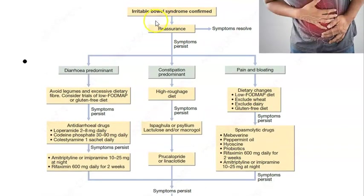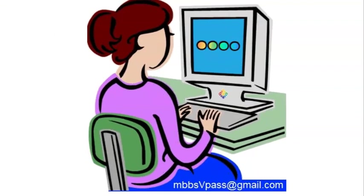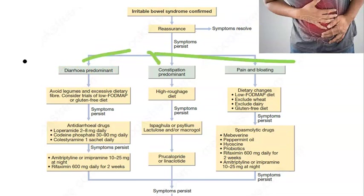For treatment: once you have confirmed IBS and ruled out other conditions, first reassure the patient — they may improve with reassurance alone. If symptoms persist, decide whether they have predominantly diarrhea, constipation, or just pain and bloating. For predominantly diarrhea, reduce FODMAPs and advise a gluten-free diet.